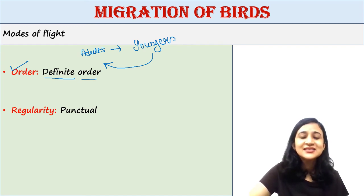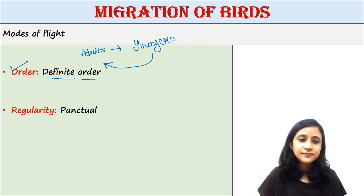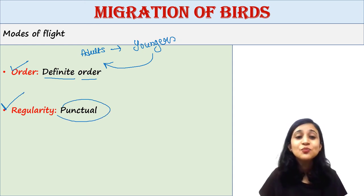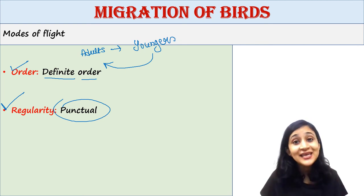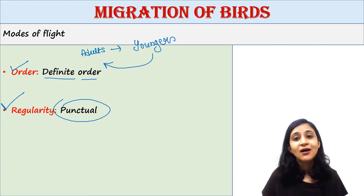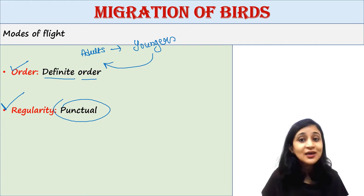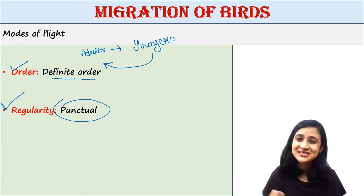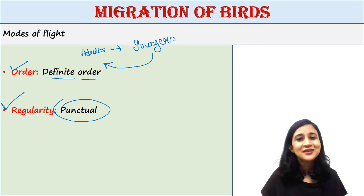Next is regularity. Migratory birds are very much punctual. They show a striking regularity year after year — the timing of departure and arrival remains the same. They are very much punctual.